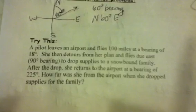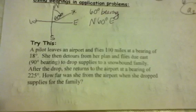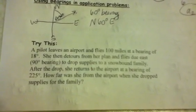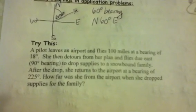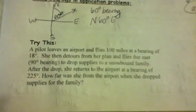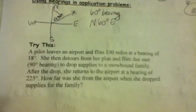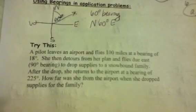Okay, let's look at this problem. A pilot leaves an airport and flies 100 miles at a bearing of 18 degrees. She then detours from her plan and flies due east, 90-degree bearing, to drop supplies to a snowbound family. After the drop, she returns to the airport at a bearing of 225 degrees. How far was she from the airport when she dropped supplies for the family? Okay, let's go through a sentence at a time.